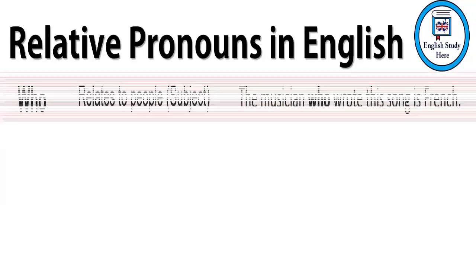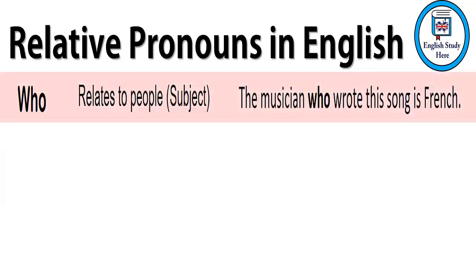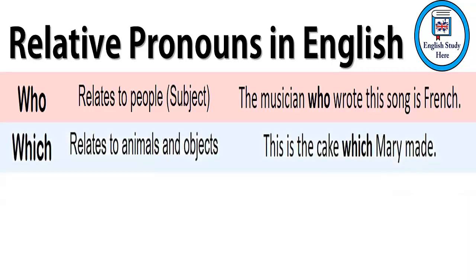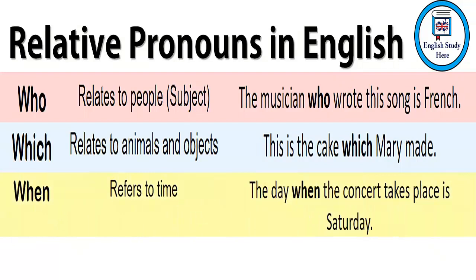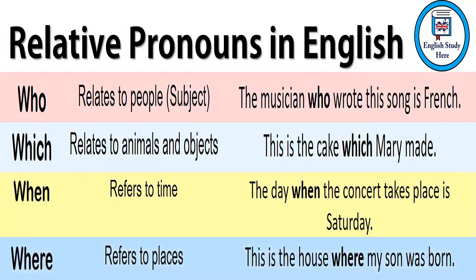Relative pronouns in English: 'who' relates to people — for example, the musician who wrote this song is French. 'Which' relates to animals and objects — for example, this is the cake which Mary made. 'When' refers to time — for example, the day when the concert takes place is Saturday. 'Where' refers to places — for example, this is the house where my son was born.